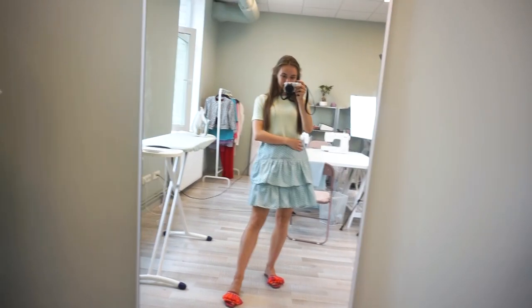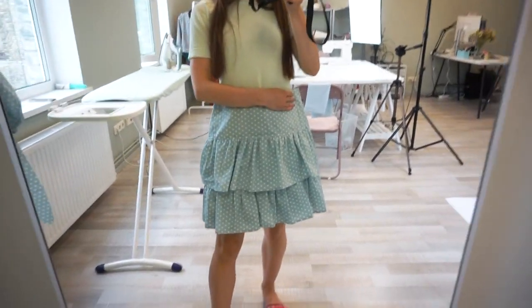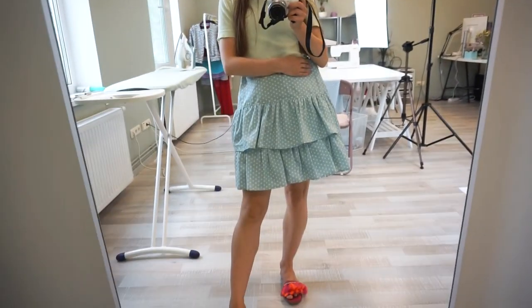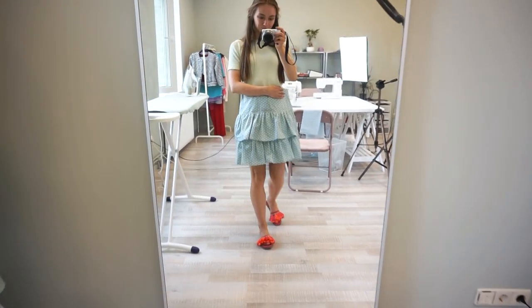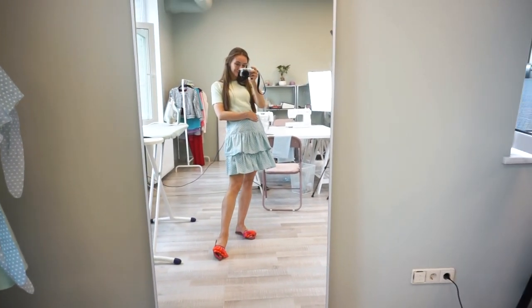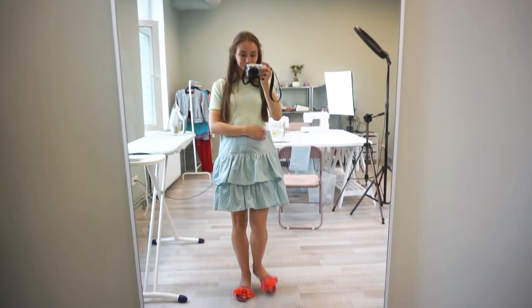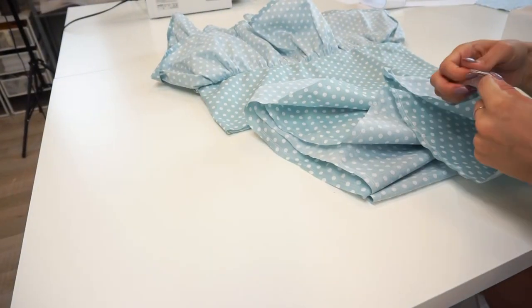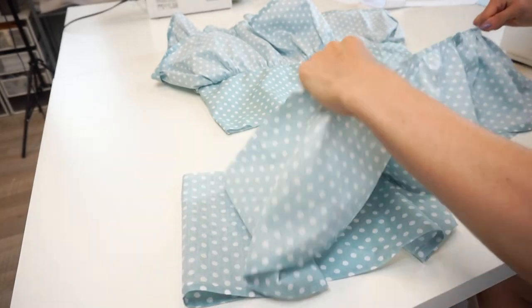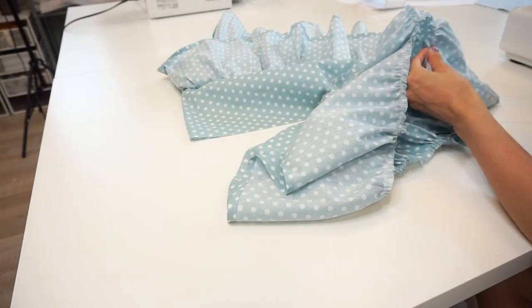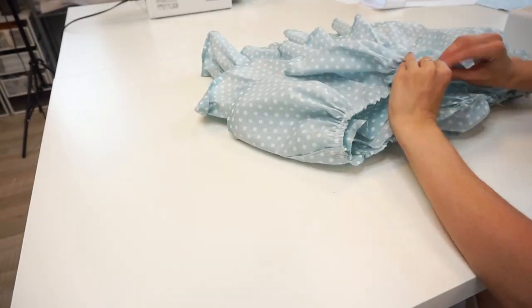If you want a mini skirt you can stop working on the frills at this moment and start working on the elastic waistband. If you do want the midi length then simply repeat the exact same steps for the third and fourth frill panels.